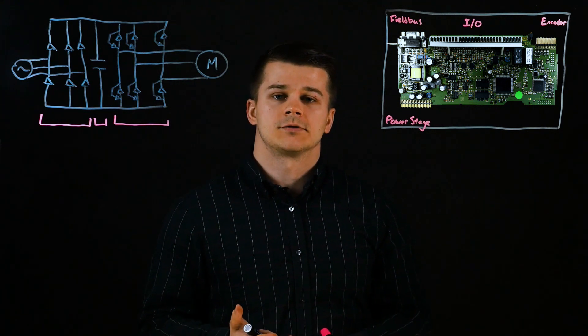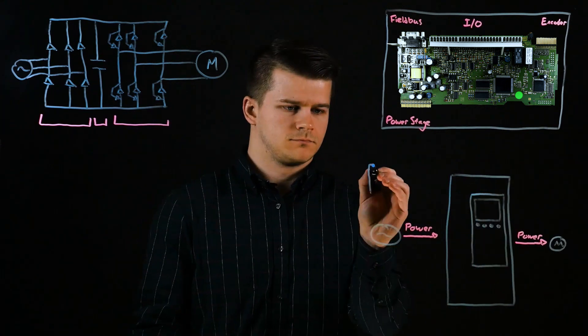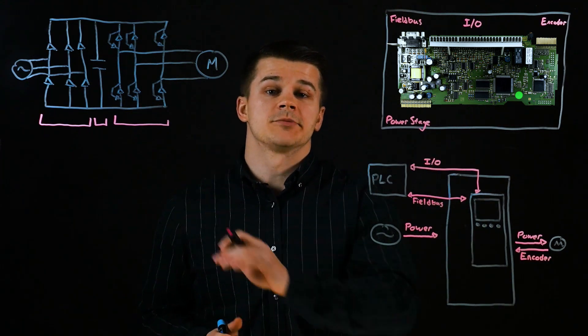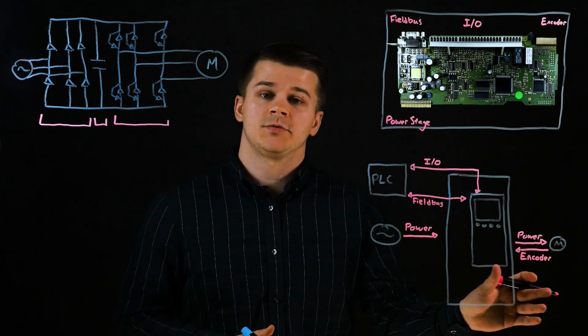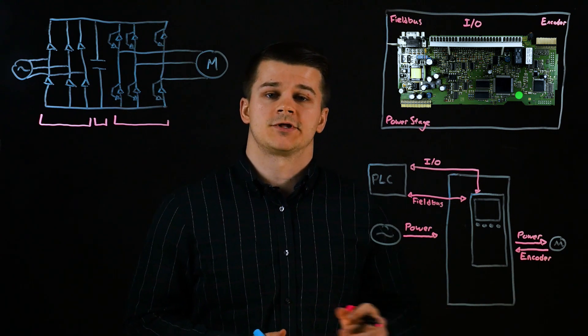A VFD consists of two components. The first, which we drew up here, is the power stage. That takes your AC line voltage and converts it to a variable voltage, variable frequency output to the motor.